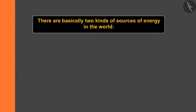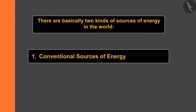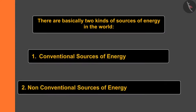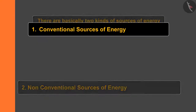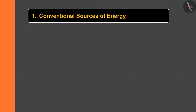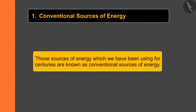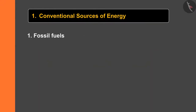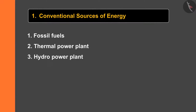There are basically two kinds of sources of energy in the world: conventional sources of energy and non-conventional sources of energy. In today's video we will learn about conventional sources of energy. Those sources of energy which we have been using for centuries are known as conventional sources of energy, like fossil fuels, thermal power plants, hydropower plants, biomass, and wind energy.